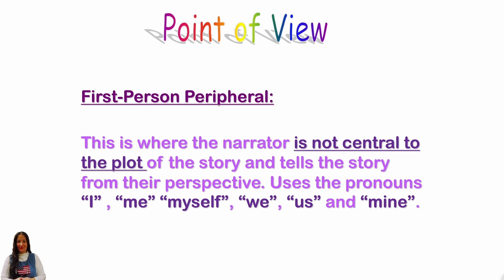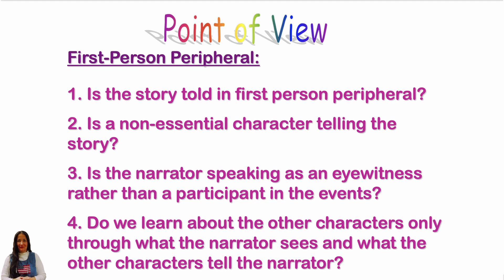First person peripheral: this is where the narrator is not central to the plot of the story and tells the story from their perspective. It uses the pronouns I, me, myself, we, us, and mine. To identify first person peripheral, ask: is the story told in first person peripheral? Is a non-essential character telling the story? Is the narrator speaking as an eyewitness rather than a participant in the events? Do we learn about the other characters only through what the narrator sees and what the other characters tell the narrator?